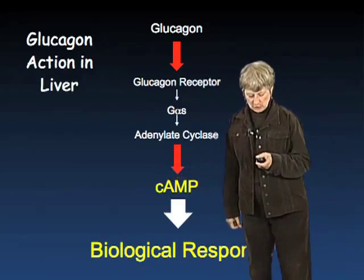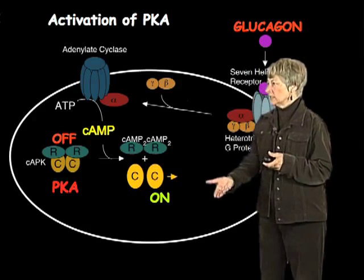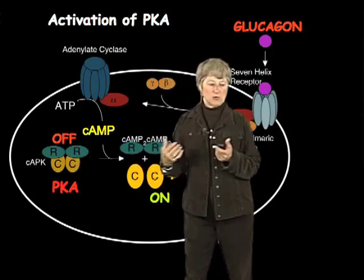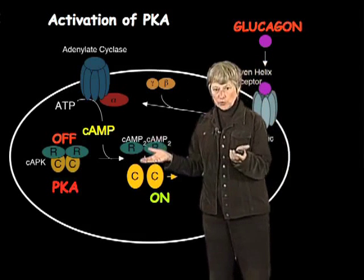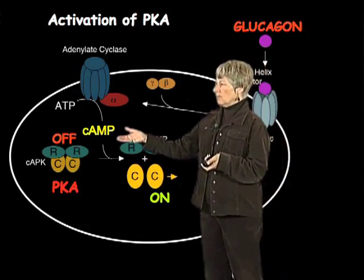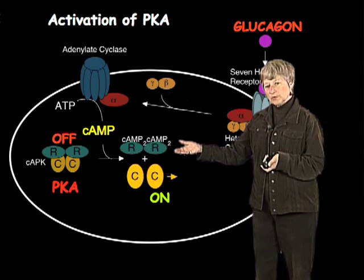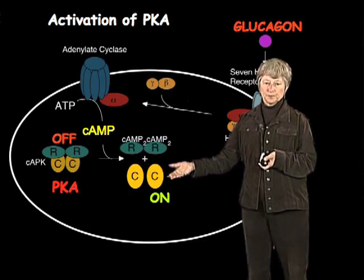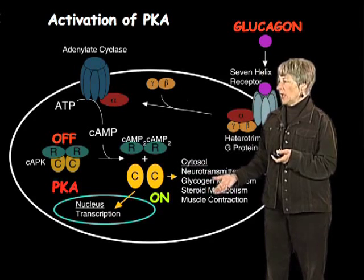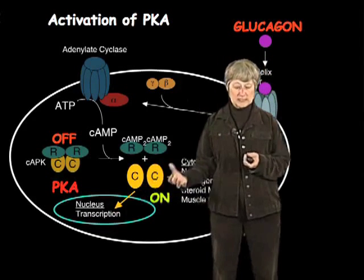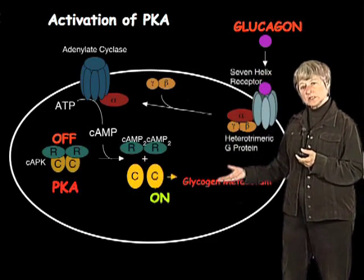Let's look at PKA. PKA, like most protein kinases, is kept in an off state. It has regulatory R subunits and catalytic C subunits. When they're together and there's no cyclic AMP around, it is inactive. Cyclic AMP — this is its main target — binds with very high affinity to the regulatory subunits of PKA, and that unleashes the catalytic activity. Depending on the cell type, PKA has many substrates and regulates many aspects of biology. It can also go into the nucleus and turn on gene transcription, so turning on one kinase can have many, many consequences.